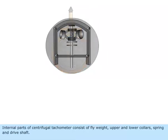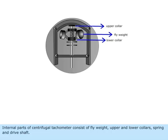Internal parts of centrifugal tachometer consist of flyweight, upper and lower collars, spring and drive shaft.